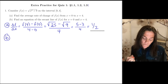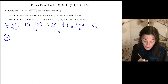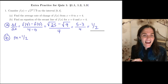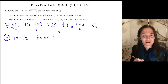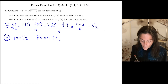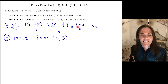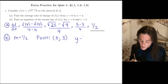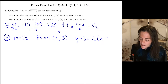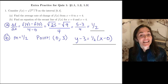Now move on to part b: find an equation of the secant line for f of x on this interval. We already have the slope — that's what we calculated in part a. The slope is one half. We also need a point, and we can use either point. I will use zero comma f of zero, which is the point (0, 3). You could also use the point (4, 5). The equation is y minus y₁ equals m times x minus x₁. This is perfectly fine in point-slope form.